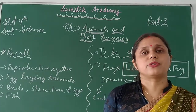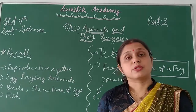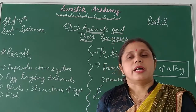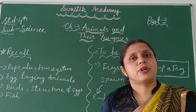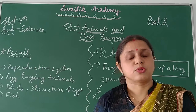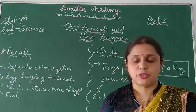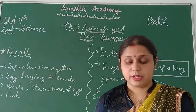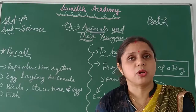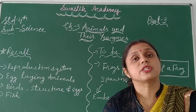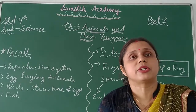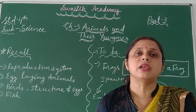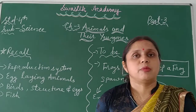So I am going to start Part 3 of this chapter. Before we start the topic, I need to revise what we have discussed in this class. We discussed the reproduction system. That means the chapter is animals and their young ones — animals and their babies.